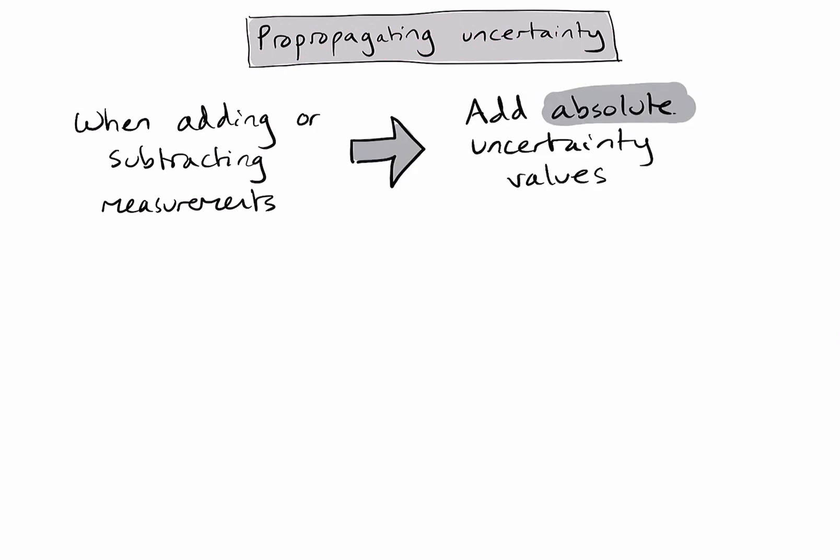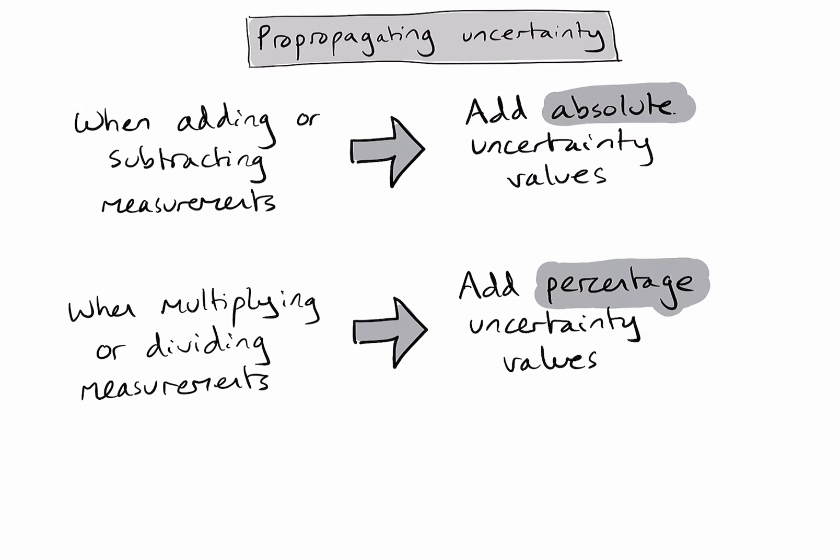And in a calculation where you are multiplying or dividing measurements, you will need to add together the percentage uncertainty values for each measurement. And the final point is that if you are using literature data in a calculation, we assume it has no uncertainty, so you do not need to propagate any values related to it. Hopefully this video was of some help.